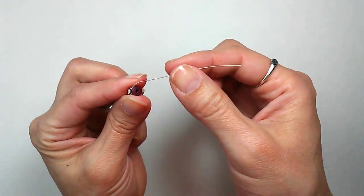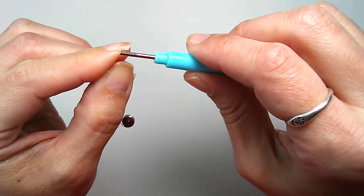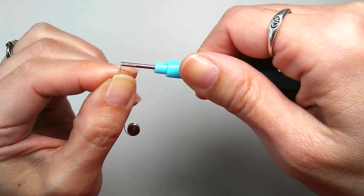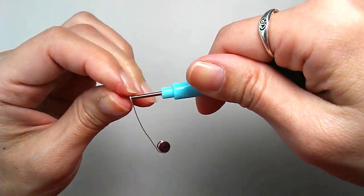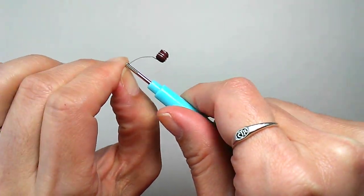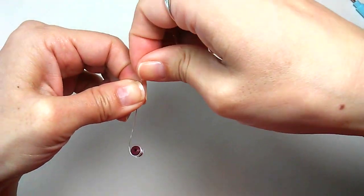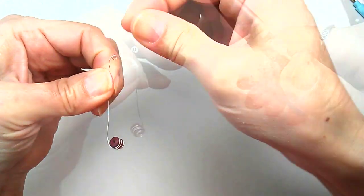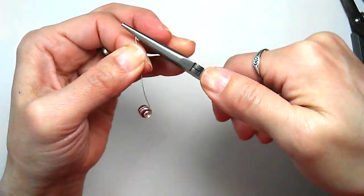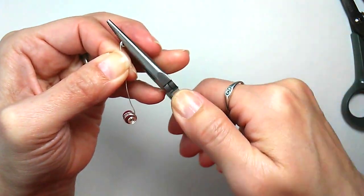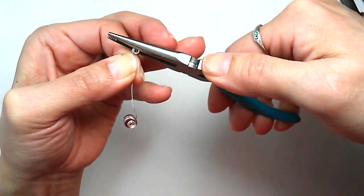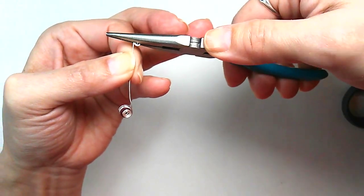Then the leftover wire will be rolled into another flat coil like we did on the other side. Needlenose pliers are handy for doing this too. Again, just make sure to squeeze the coil flat as you turn the wire.